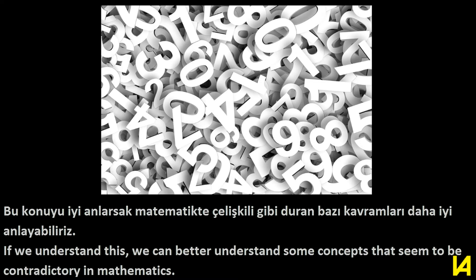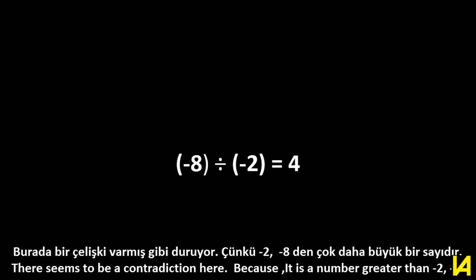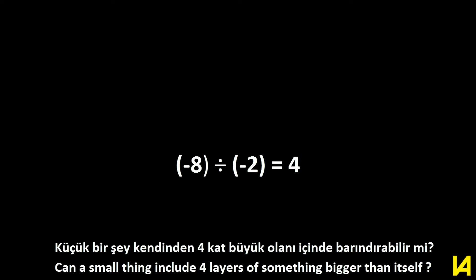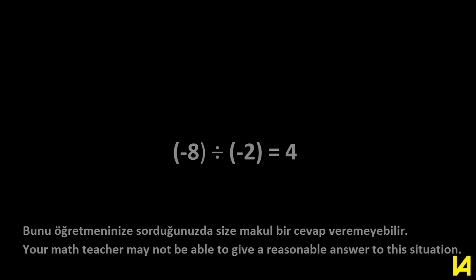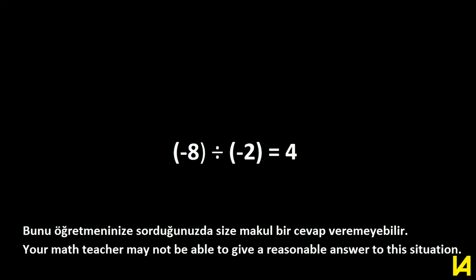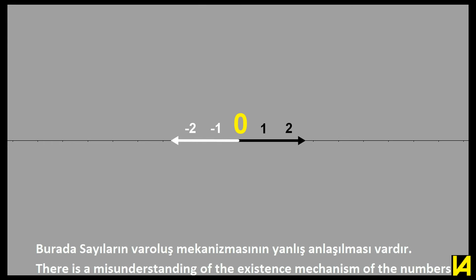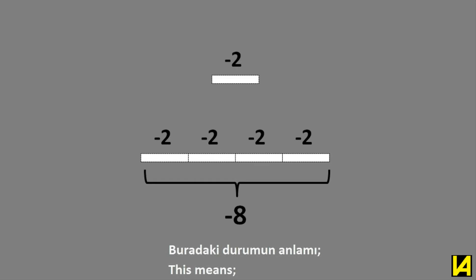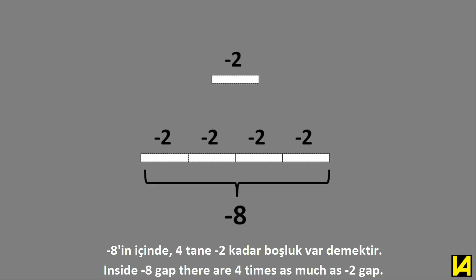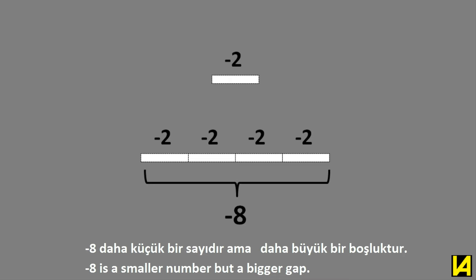In mathematics, for example, negative 8 divided by negative 2 seems to present a contradiction, because negative 8 is a number greater than negative 2 — can a small thing include four layers of something bigger than itself? Your math teacher may not be able to give a reasonable answer to this. In fact, there is no contradiction here; there is a misunderstanding of the existence mechanism of numbers. Inside the negative 8 gap there are four times as much as the negative 2 gap — negative 8 is a smaller number but a bigger gap.